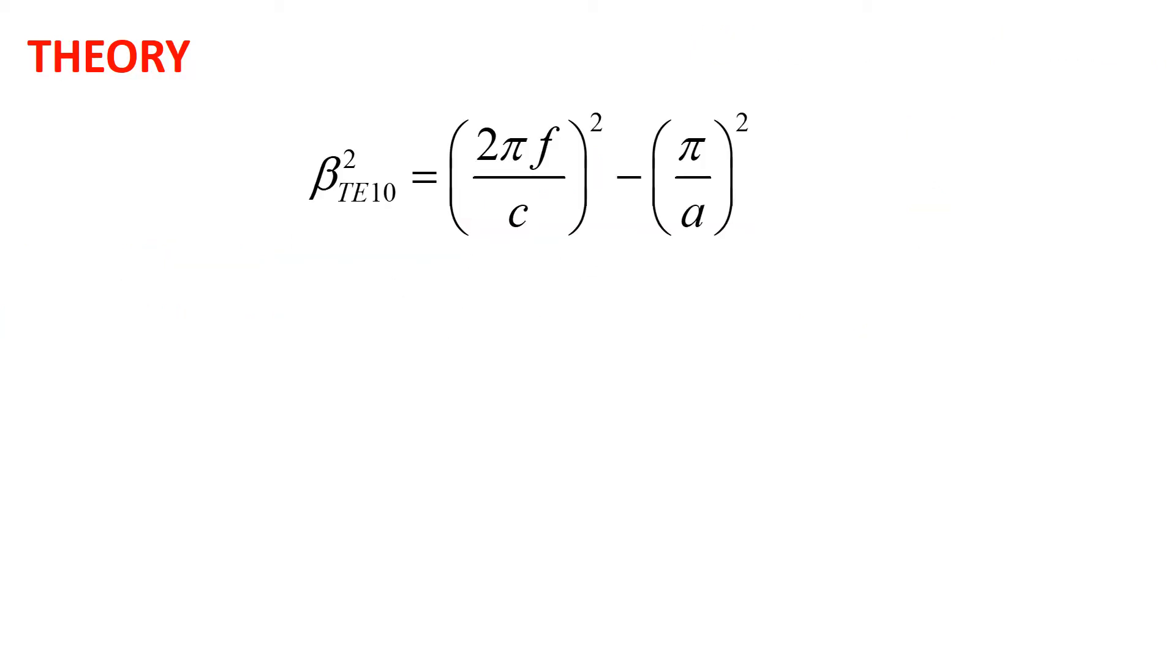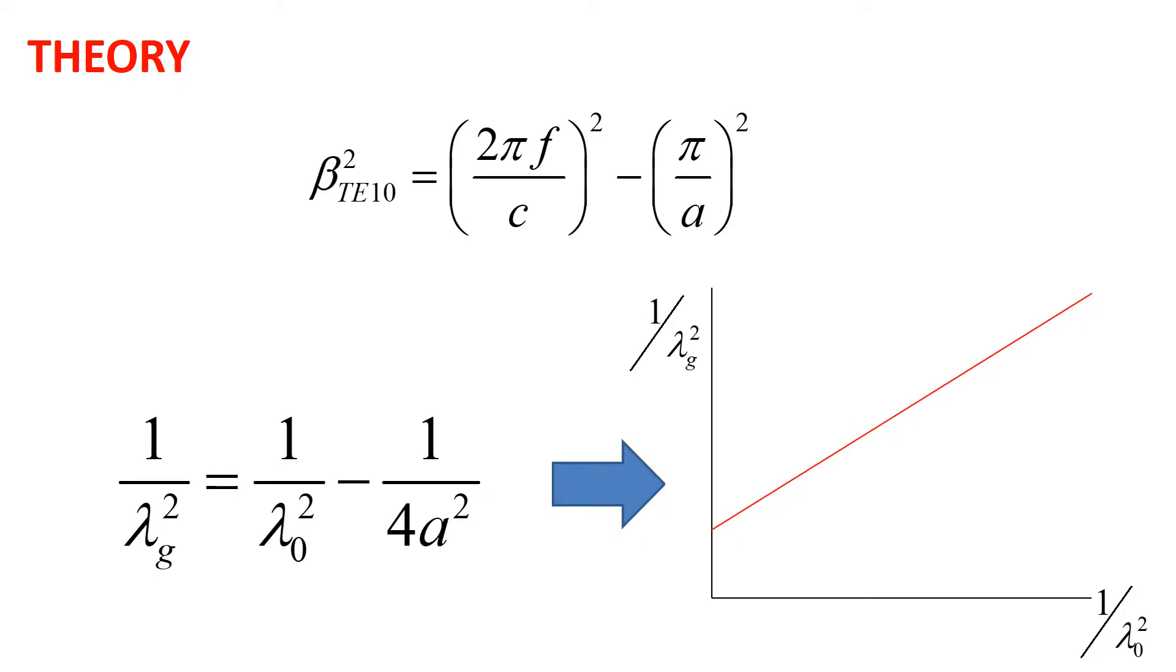The propagation constant of the TE10 mode is written in terms of frequency and the broad dimension of the waveguide, or in terms of the guide wavelength and the free space wavelength. The graph of this equation is a line with a slope equal to 1 and an intercept value that is inversely proportional to the square of a.